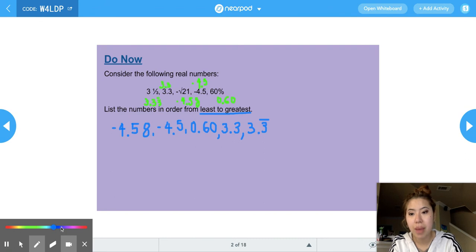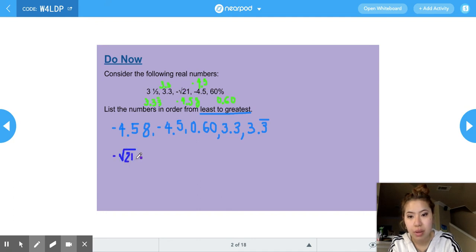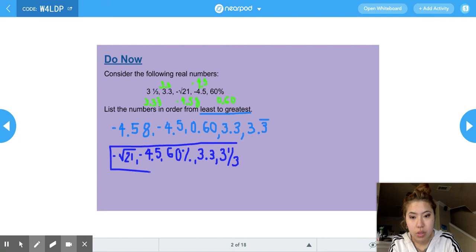So now I can turn it back into its original form. So negative 4.58 was originally negative square root of 21. Negative 4.5 was originally negative 4.5, so I'm just going to leave it as a decimal. 0.60 was 60%. 3.3 was 3.3. While 3.3 with a repeating 3 is 3 and 1 third. So our answer in order from least to greatest is right here.